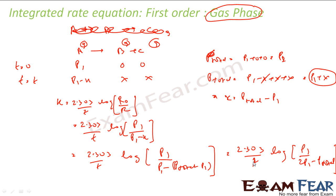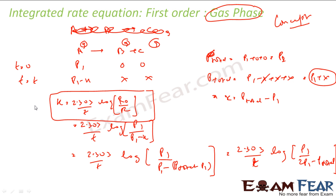Please note — this is not a formula to memorize. This is just the concept. For any gas equation, you have to derive it because the stoichiometric coefficients may differ. The concept is we still use the same first order formula for k, but instead of concentration in moles per liter, we use pressure, and x is derived based on the specific equation and expressed using total final pressure.